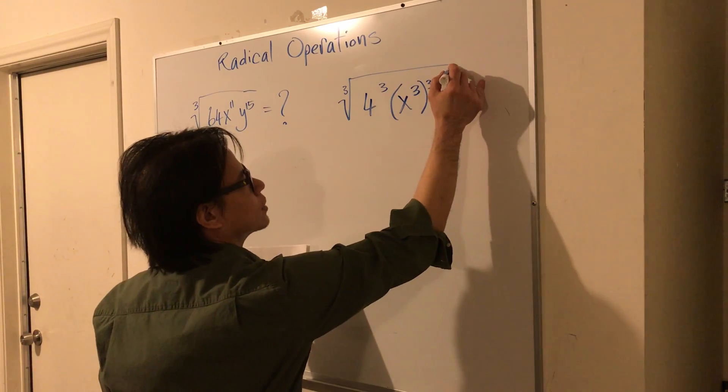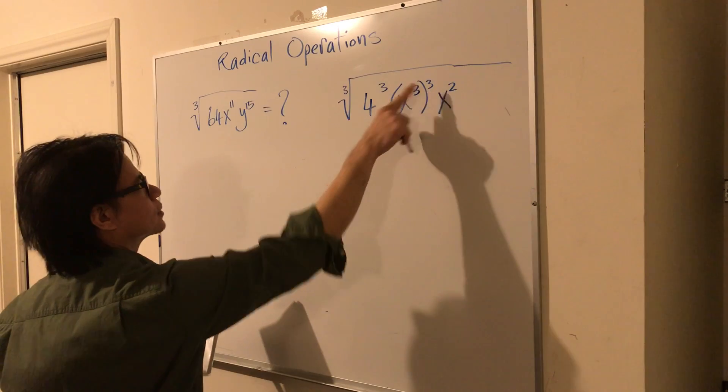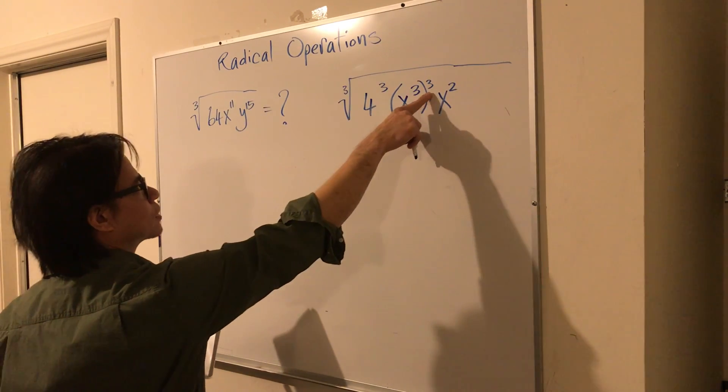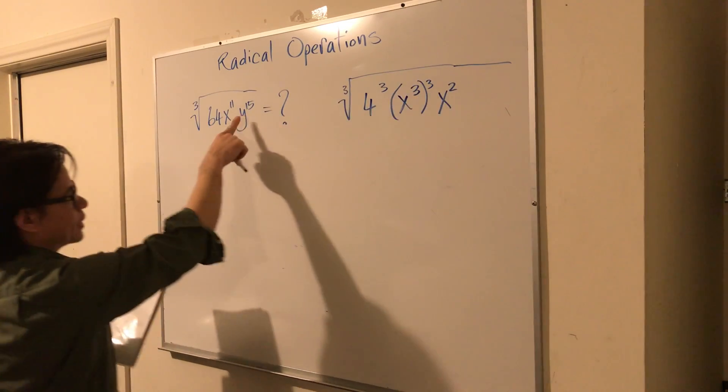So that was the difficult part there to recognize that. This part here, x to the third to the third power is 9, x to the ninth, and then you need 2 more to make 11.